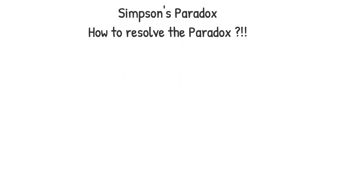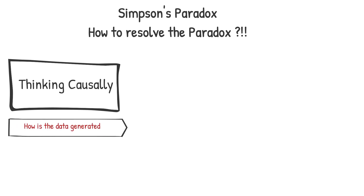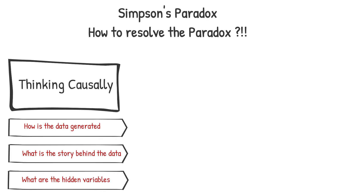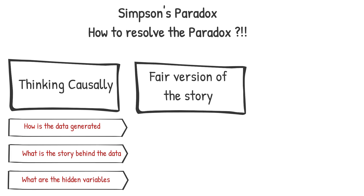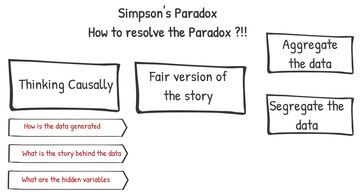How to resolve the paradox? Thinking causally is always the key. Go and get enough information about how your data was generated. What is the story behind your data? What are the hidden unmeasured variables impacting the supposed cause and the supposed effect of your experiment? Only then will you be able to get a fair version of the story, and only then will you be able to decide whether to aggregate the data or to segregate it into groups. For more information about Simpson's Paradox, check out the links in the description below.